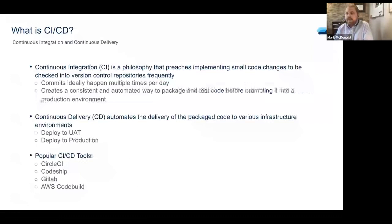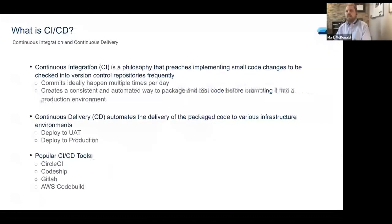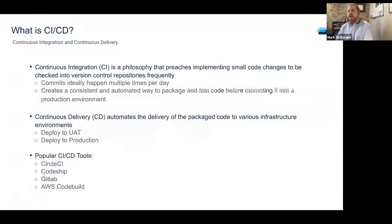At a high level, CI is the philosophy of implementing small code changes checked into GitHub or your version control system frequently — ideally a couple of times a day. You keep those changes small, and the advantage is when bugs are discovered in production, you don't have to roll back a ton of commits. The biggest benefit is having automation in place to test and package your code before it gets deployed into a new environment. CD is the second part — how you deliver that packaged and tested code into an environment like UAT or production.